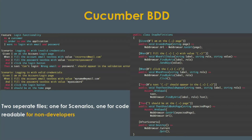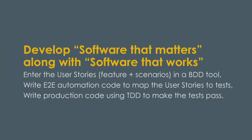Here is Java code — two separate files: one for scenarios/features and one for automation. Readable for non-developers. If you use both Cucumber and Spock, you can develop software that matters along with software that also works.